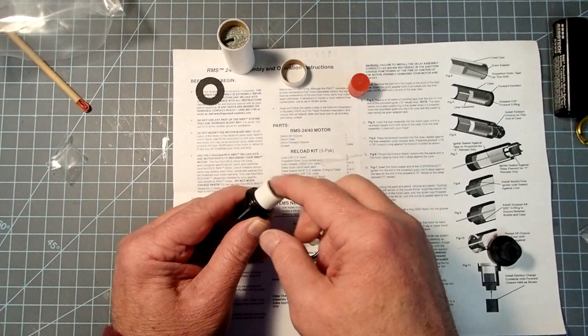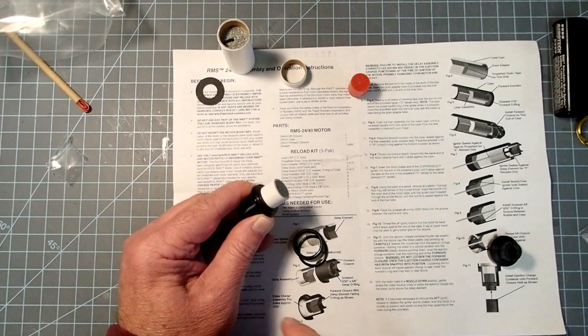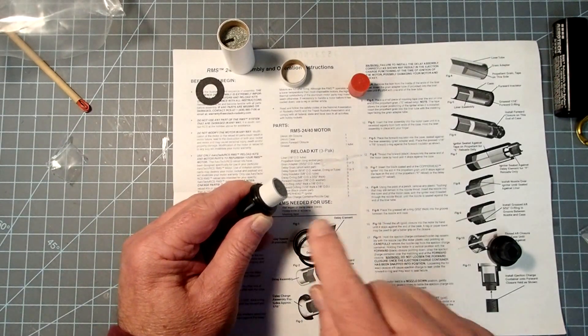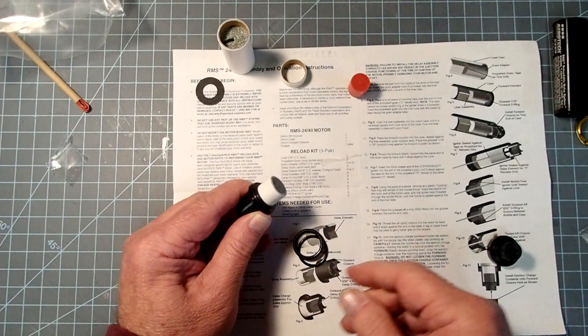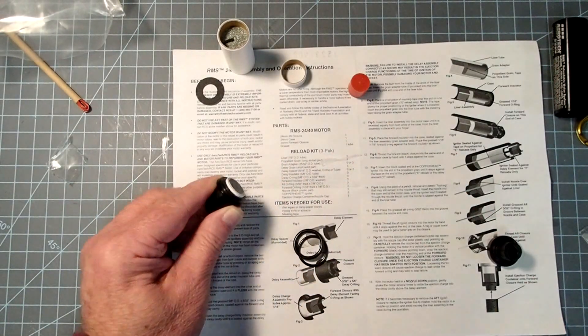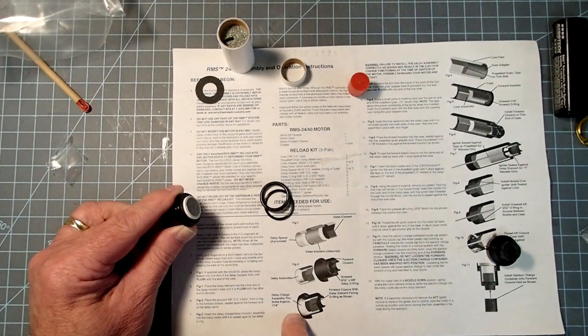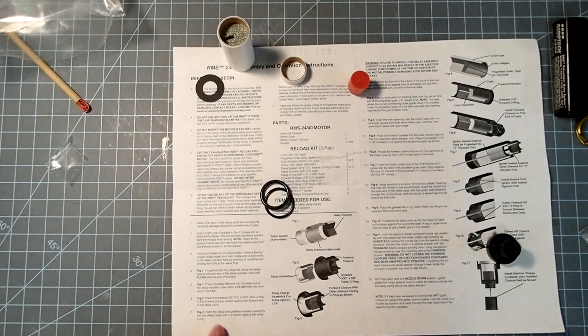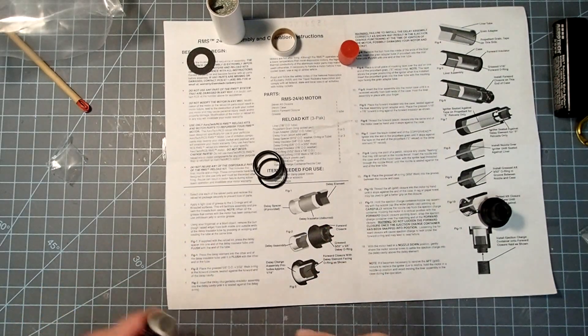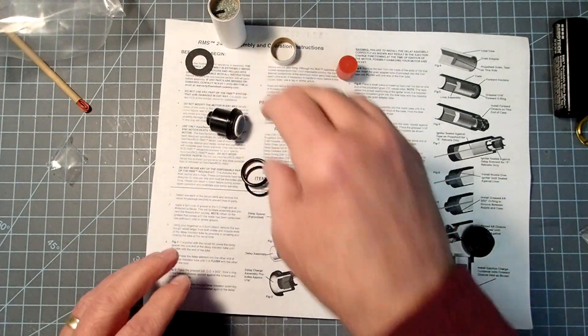If you do need to do that and you've never done it before, go look on Apogee Components' website. They have an excellent video on how to use those delay grain changing kits. For mine, I'm just going to go ahead and push that in. And again, they show a spacer ring here. This kit does not have it, so we don't have to worry about that. I'm just going to set that aside for a moment.